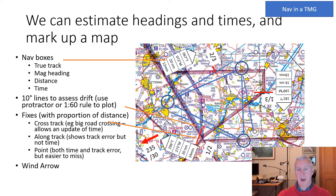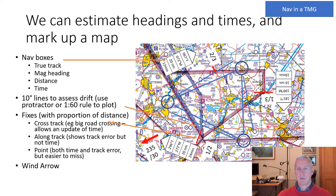We mark fixes along the track to estimate track error and progress. On the way out from Gransden we used Little Staughton; on the next leg the A1M for a time check; and on the third leg, Witton. Those are three things we can use to estimate the errors we've got.